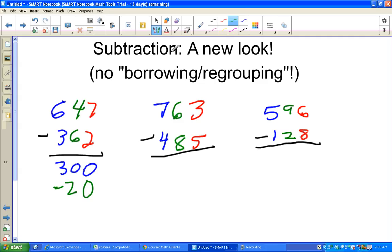And then 7 minus 2, that's a piece of cake, that's 5. So now we take 300 and negative 20, that gives us 280, and 280 plus 5 is 285, and we haven't done any borrowing or regrouping.